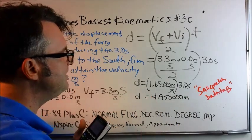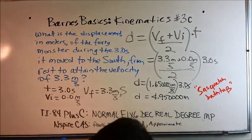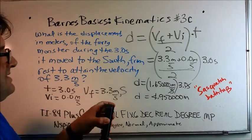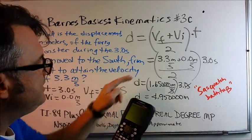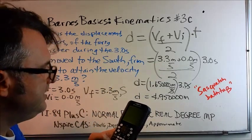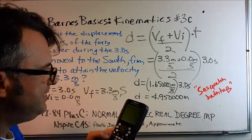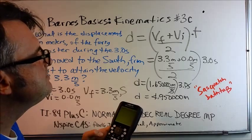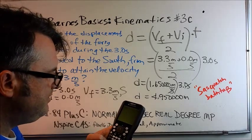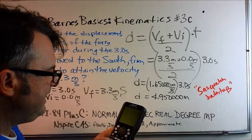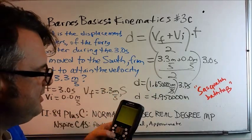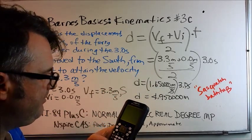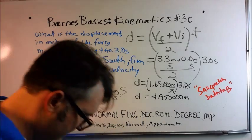When I plug this same information into the CAS, I am going to put 3.3 plus 0, enter, divided by 2, enter, get 1.65, multiplied by 3.0, enter, and I get 4.95.